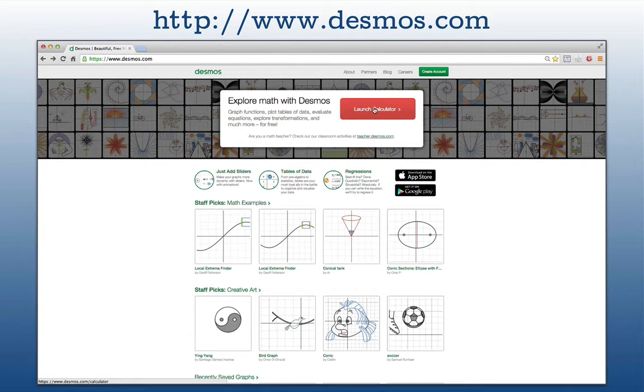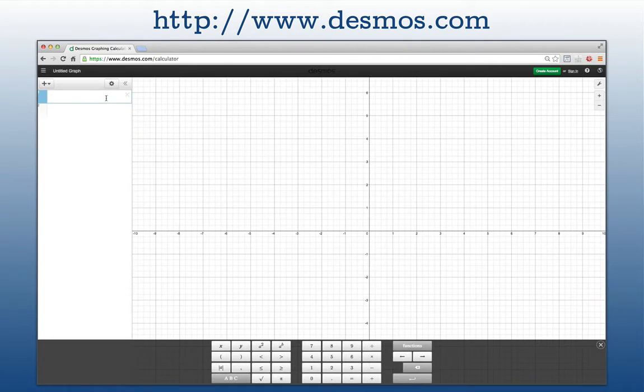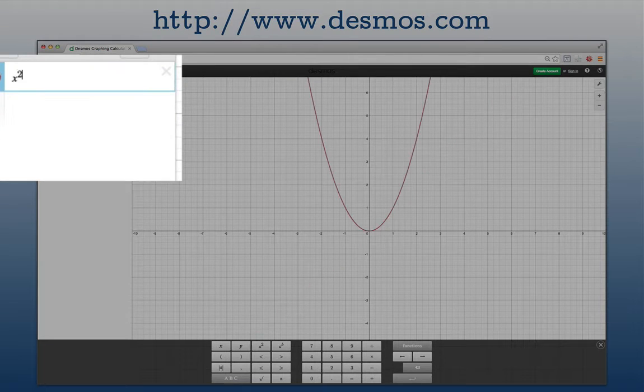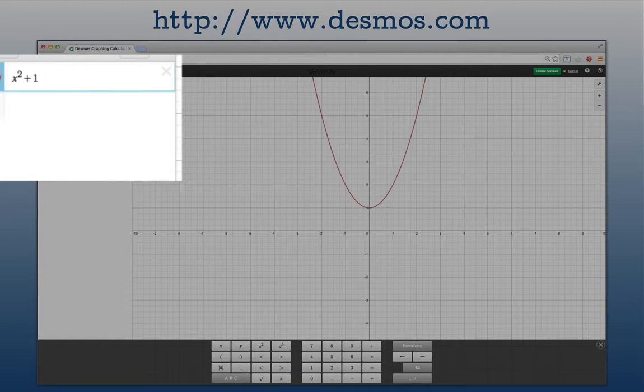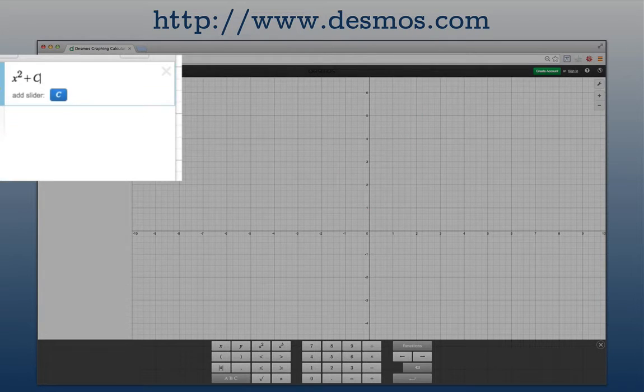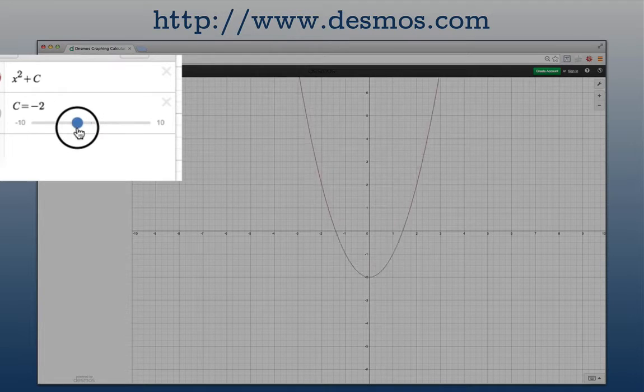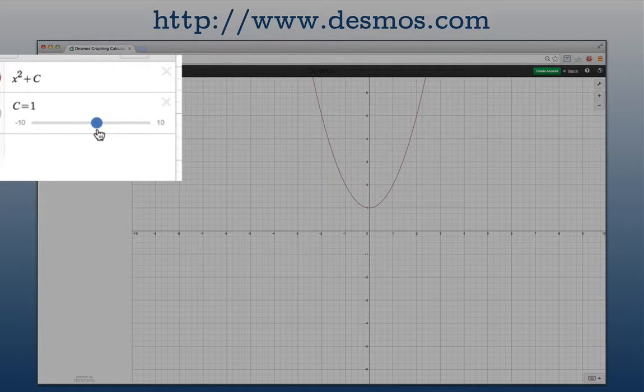Desmos.com is a free online utility. You can create an account if you wish, but you can use it as is. It's really convenient. You can plot an expression and it'll start generating it for you. You can also add a constant and it'll ask for a slider capability.